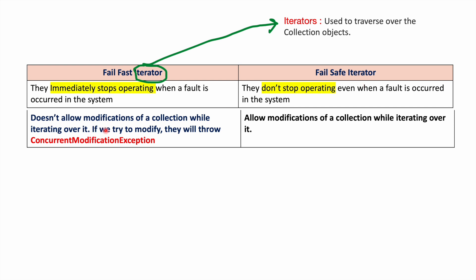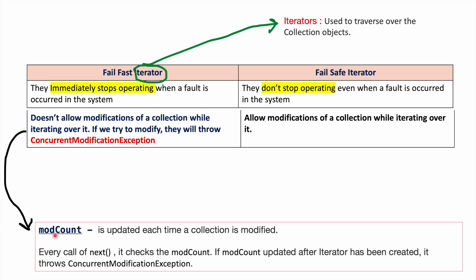Now the question is how do they know whether we are modifying or not when we are iterating? HashMap internally has a flag called modCount. This modCount is updated each time the collection is modified. Whenever we are performing a put operation or remove operation, this modCount will be updated — either incremented or decremented based on our operation. So modCount will have the current size, that is, how many key-value pairs are there in the HashMap.